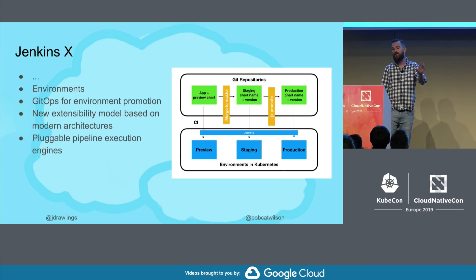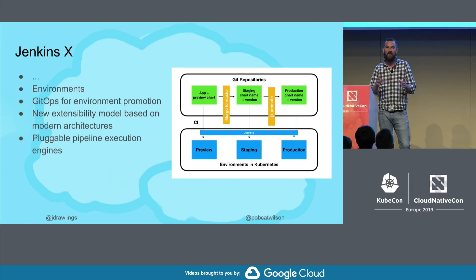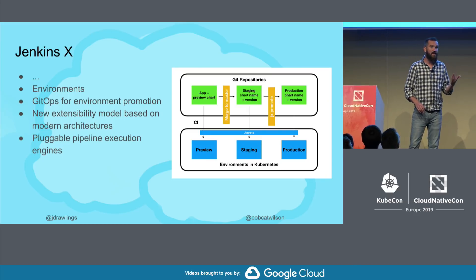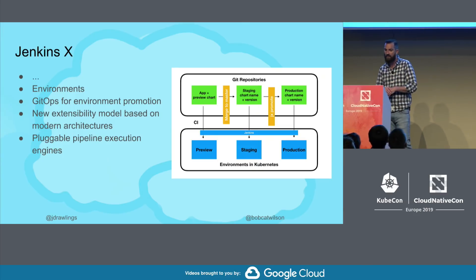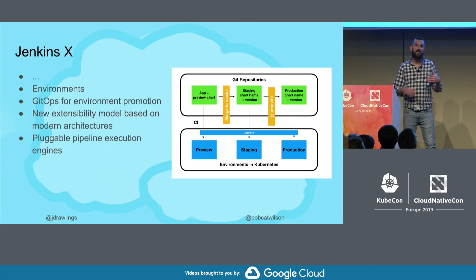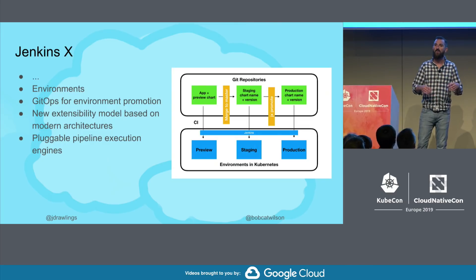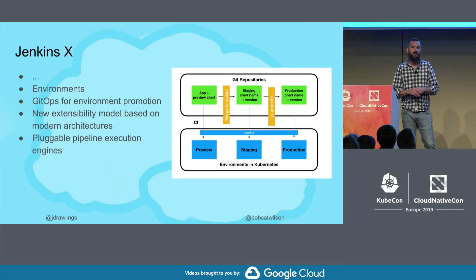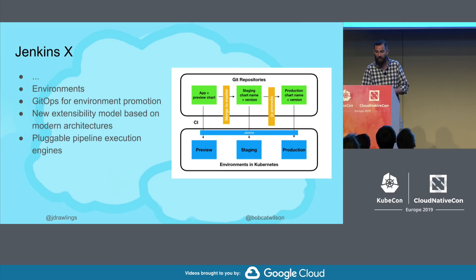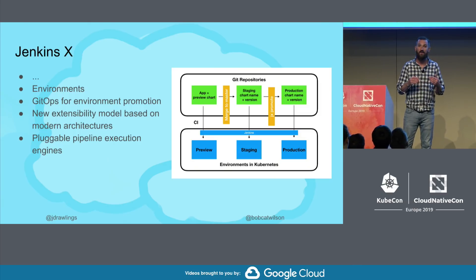With Jenkins X we have the concept of environments — this is kind of new from traditional Jenkins. We've taken and extended Kubernetes in the way it's meant to be extended, using CRDs. We're also really embracing this new architecture. Like the existing plugin model, we want to promote microservices and event-driven architectures so that we can actually scale those plugins as well. And one of the really exciting things is we can support pluggable pipeline execution engines, which leads us nicely to Tekton.